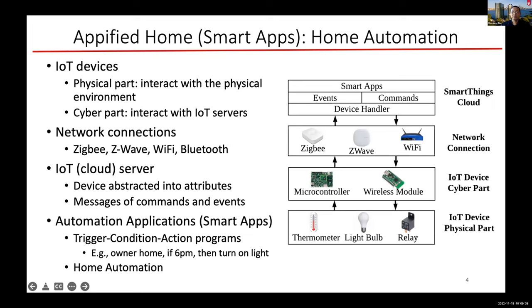It's very simple: you have a trigger, which will let the program check the condition, and if the condition is met, it executes an action. A simple example is the user can set up an automation rule using the GUI interface: when I am home and it's 6pm or after, then turn on the light automatically. Or if the temperature is lower than 70 degrees, turn on the heater. You can set up more complicated automations, but all of today's smart home automation uses the trigger-condition-action paradigm.